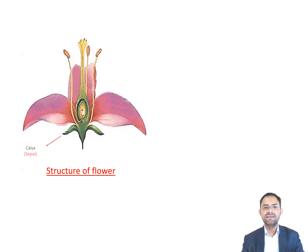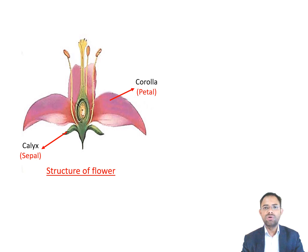Calyx is the outermost whorl and is composed of green leaf-like structures called sepals. The sepals protect the flower during bud stage. Corolla is the second whorl of the flower and is composed of petals. Petals are generally large, colorful, and attract insects for pollination.